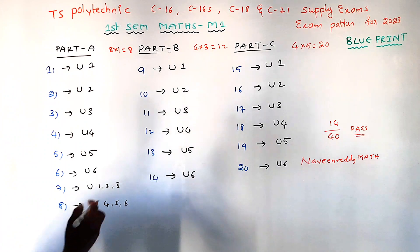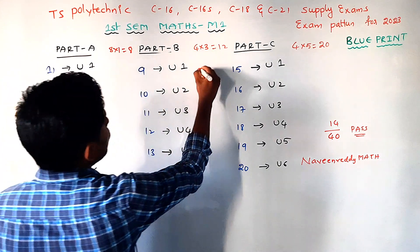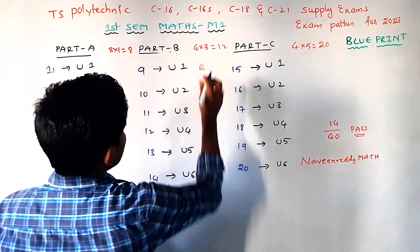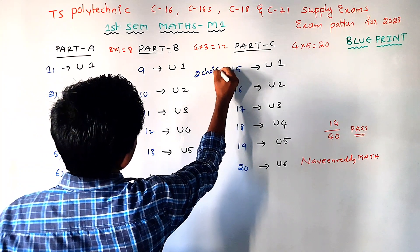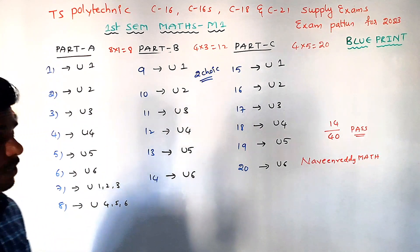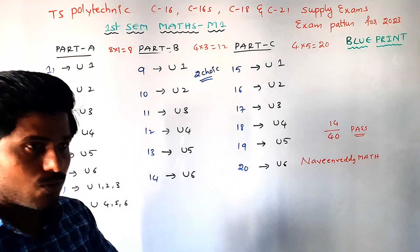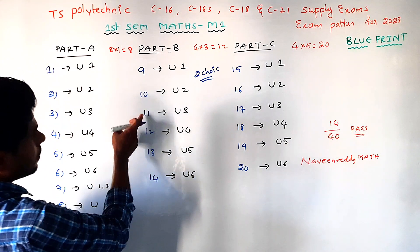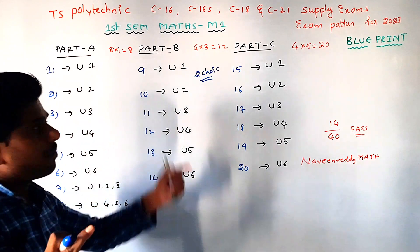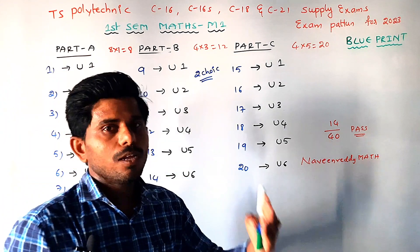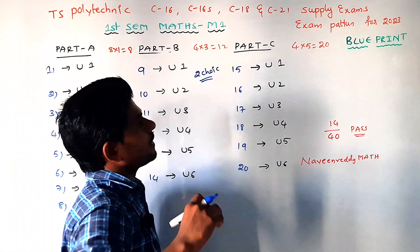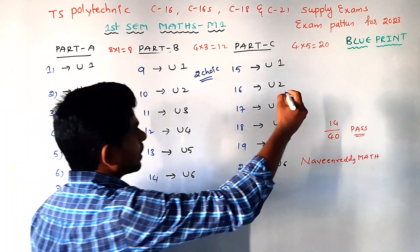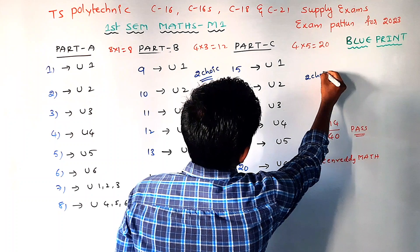In Part B, there are 6 questions total, with 2 questions per choice set. Two questions are choice-based. Unit 1 has one question, Units 2 and 3 have one question, and Units 4, 5, and 6 each have one. If you prepare even one unit well, you are confirmed to attempt at least one question. In Part C, there are 6 questions with 2 questions per unit grouping — same structure, worth 5 marks each.